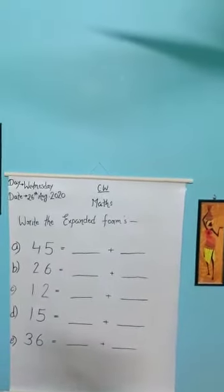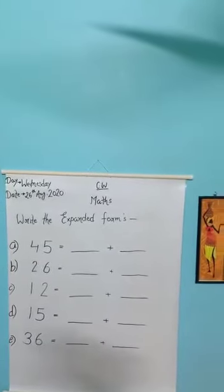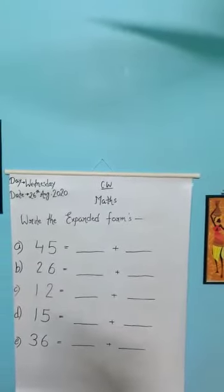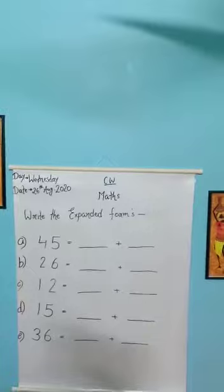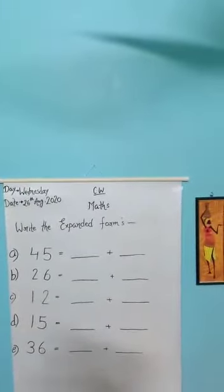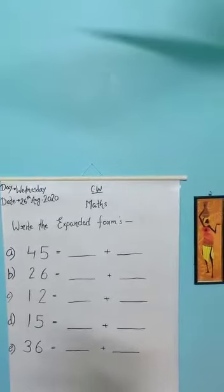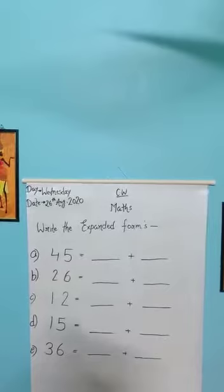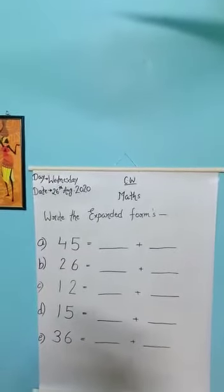Now, let's start the topic. Our topic is expanded form. Aaj ki topic expanded form hai beta. Expanded form means it shows the value of the number. Expanded form ka matlab hai beta, jo number hain unki value batana. It will be the tens, ones and hundreds. Tens hai, ones hai, hundreds hai ya aur bhi koi number hai. Okay, now start.